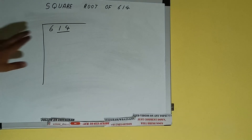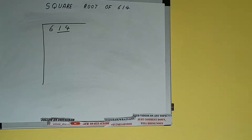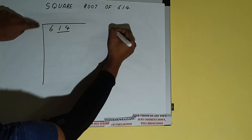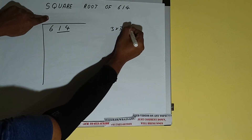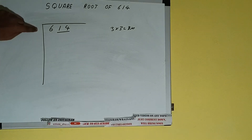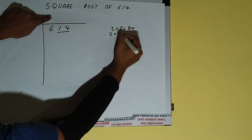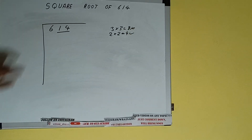The rule is whatever number we write here we have to write here also. So if we write 3 here and 3 here it will be 9, which is greater than 6, so we cannot take it. If we write 2 here and 2 here it will be 4, which is good to take.